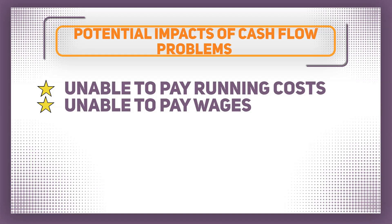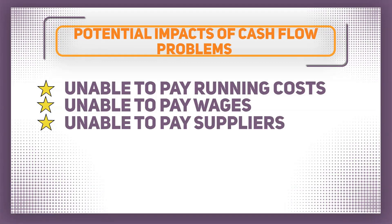Another impact might be that if your suppliers get wind that there is a cash problem, instead of trying to help you out, they may become wary of giving you business credit, which might actually make the problem worse. So they might ask you to pay in 30 days instead of the usual 60 days, and if they are your main or only supplier, well this could be a huge problem.